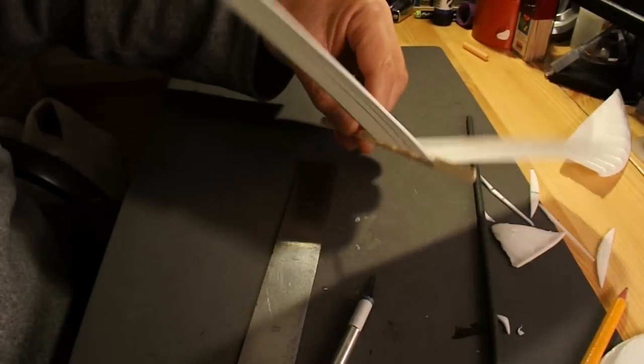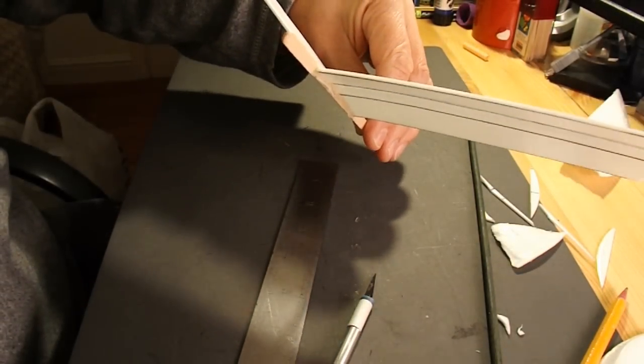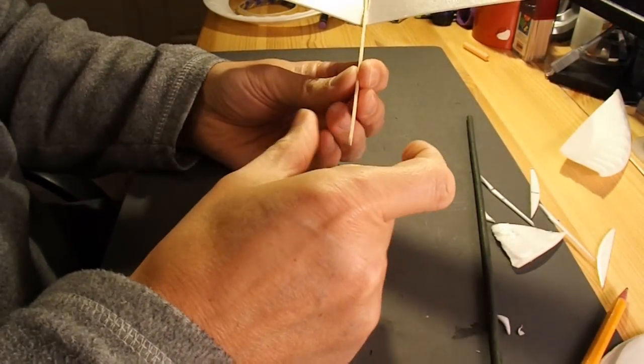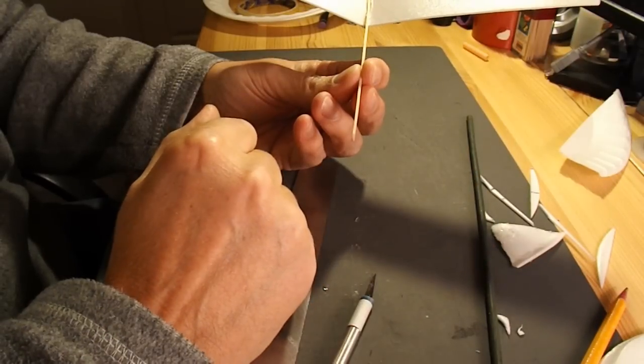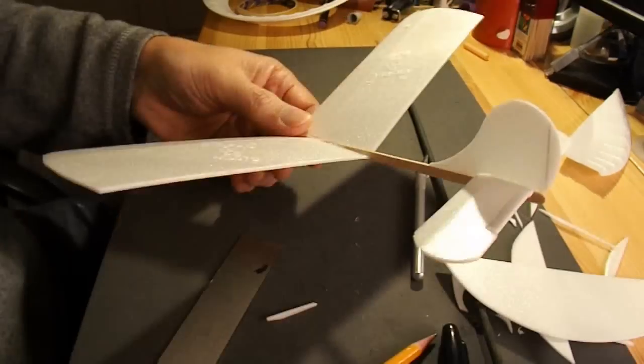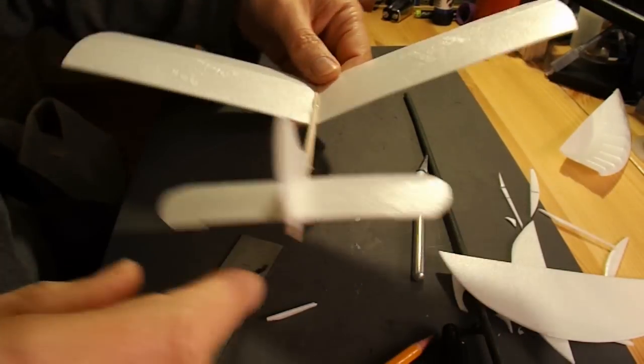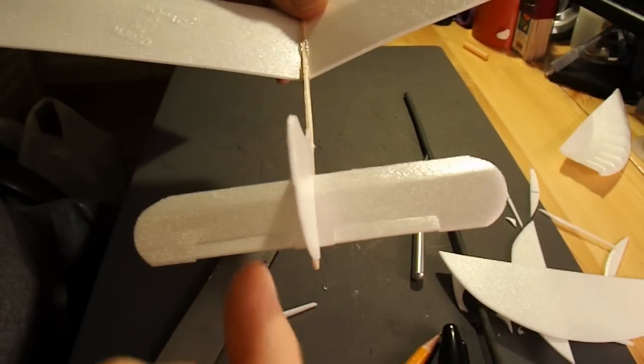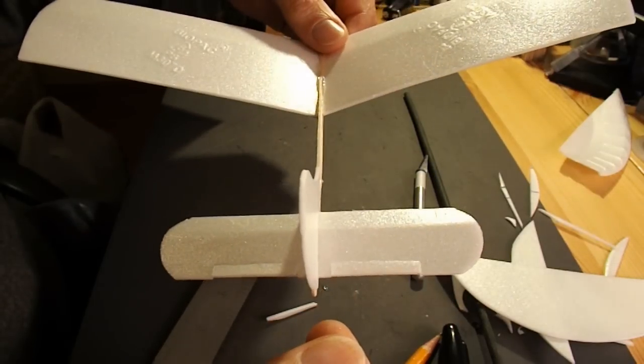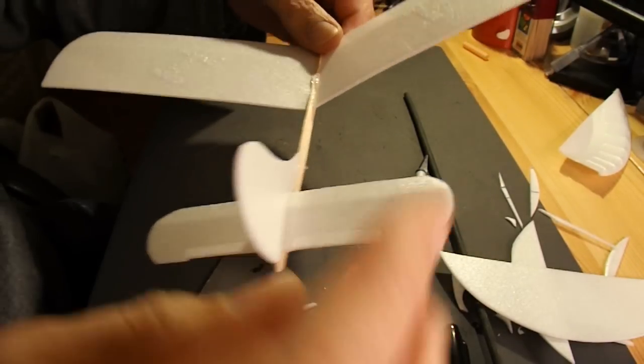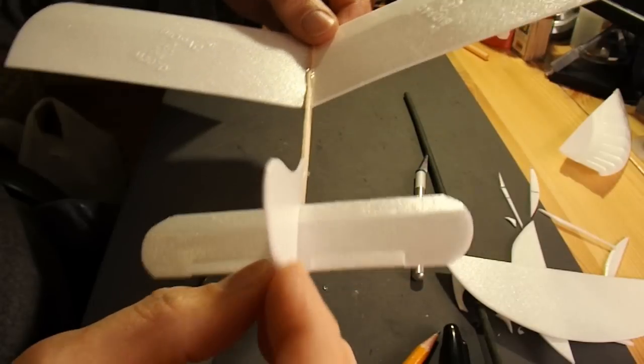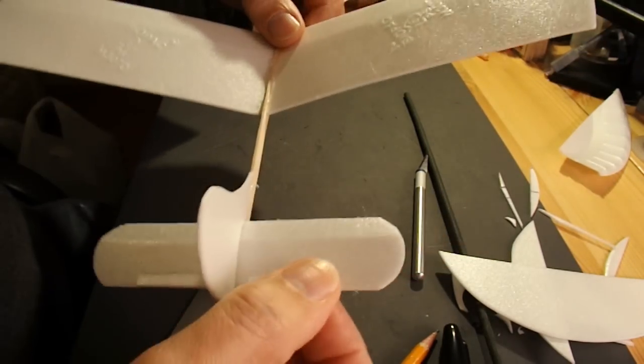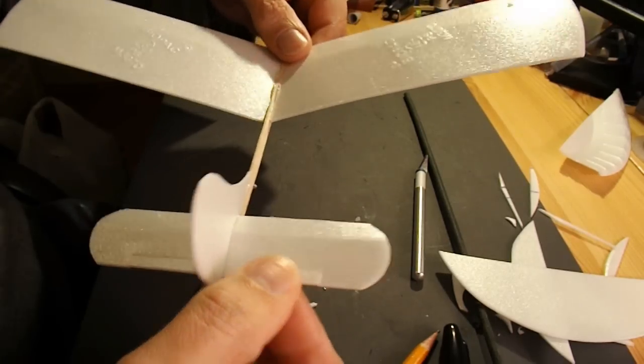I've just hot glued the wings onto the body. Now I need to make a tail and a rudder. So that's the rudder and the tail. I don't know if you can see but I've actually cut little ailerons, so that I can give it some adjustment up and down if necessary.